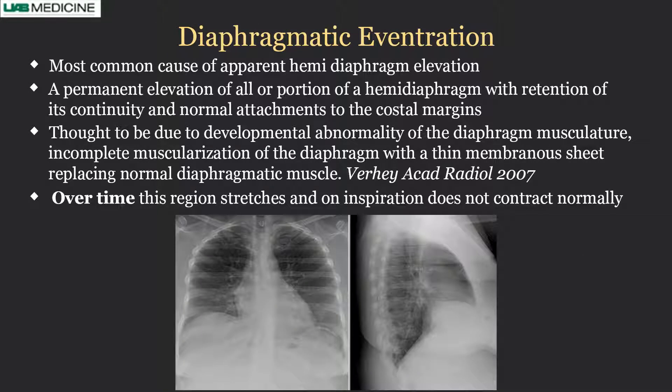What exactly is eventration? It's a congenital weakness of the diaphragm where the lateral aspect of the musculature is not developed and is replaced by a thin membranous sheet. The diaphragm is still there, but over time this region stretches, and on inspiration it does not contract normally. In fact, on fluoroscopy it behaves abnormally.